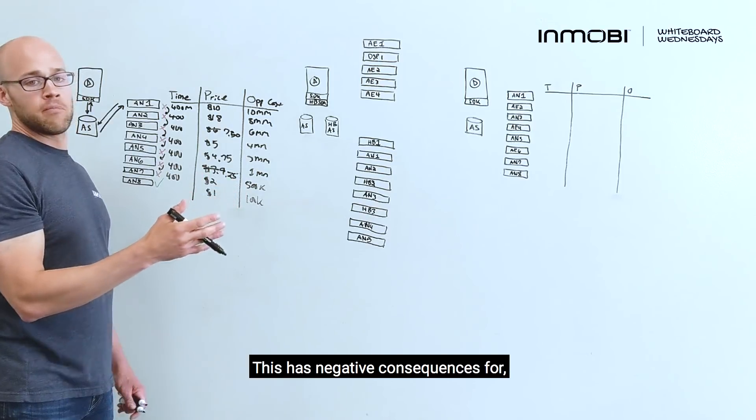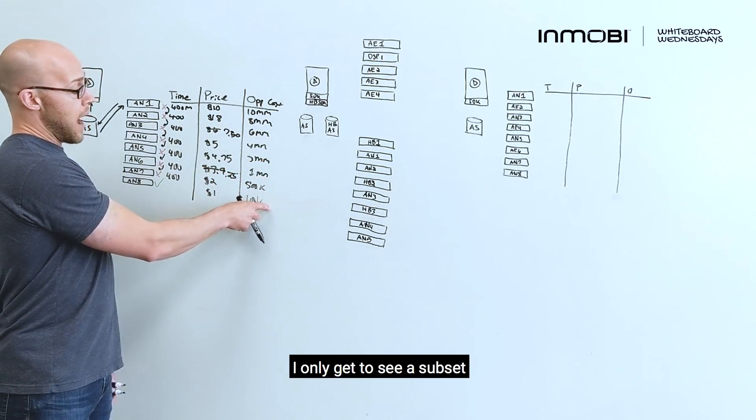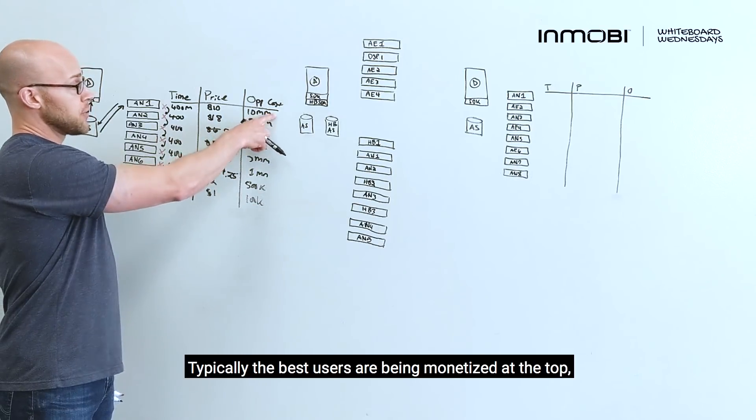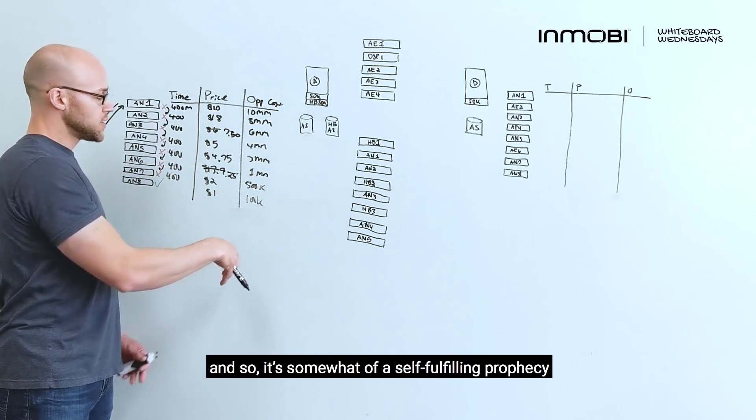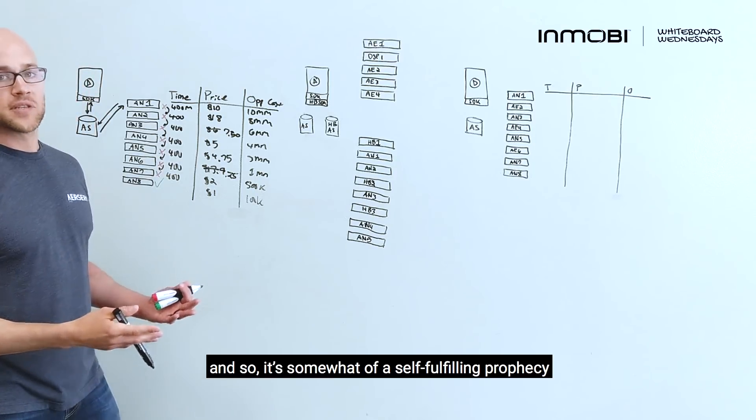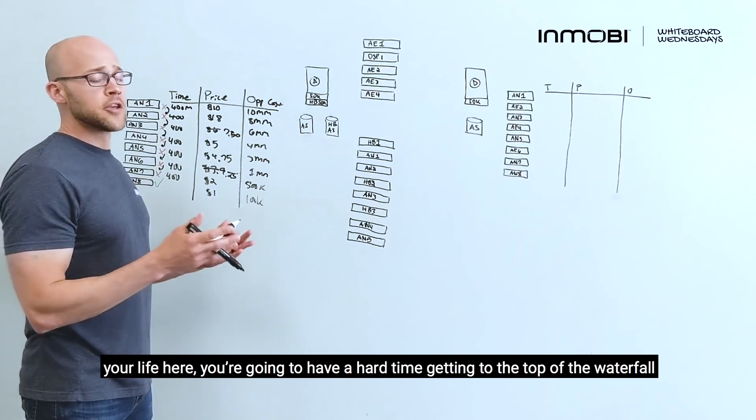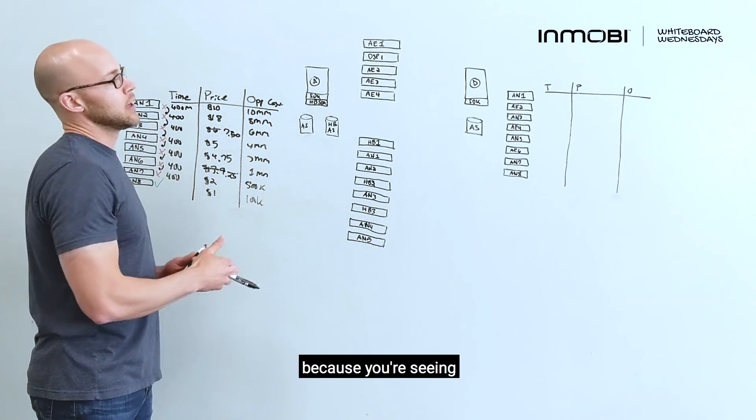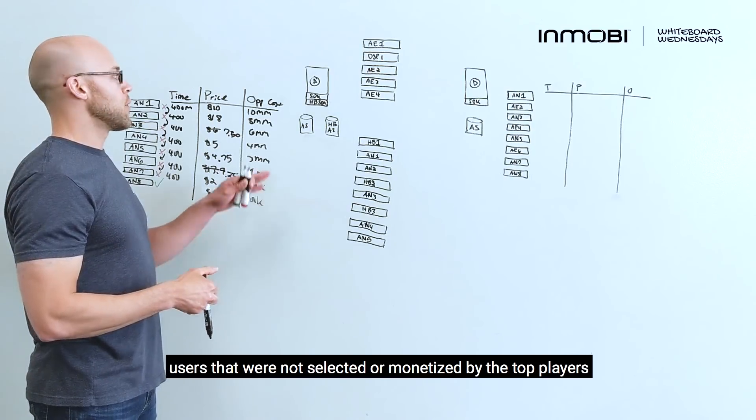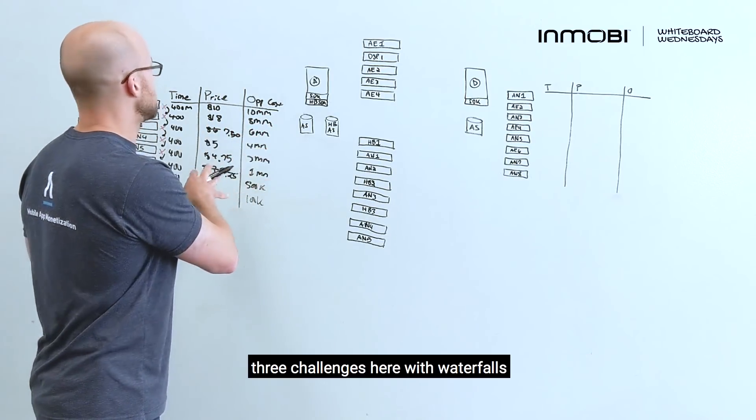This has negative consequences, especially for the people down here. I only get to see a subset. Typically, the best users are being monetized at the top, and so I'm getting remnant inventory. And so it's somewhat of a self-fulfilling prophecy. If you're put at the bottom of the waterfall or even at the middle, you're going to have a hard time getting to the top of the waterfall because you're seeing users that were not selected or monetized by the top players. So three challenges here with waterfalls.